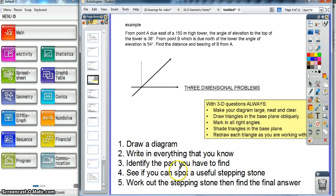Some extra things to consider with 3D diagrams. Make your diagram large, neat and clear. Draw triangles in the base plane obliquely, I'll explain what that means in a second. Mark in all right angles, shade triangles in the base plane, and redraw each triangle as you're working with it. You'll see that as we work through these five steps here.